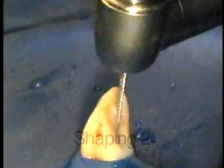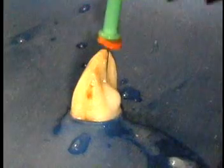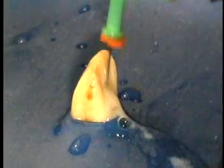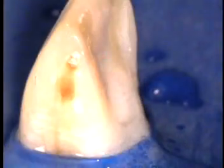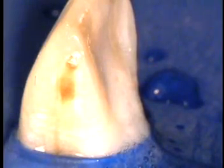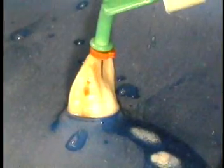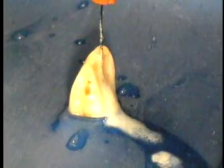This technique is now repeated with the shaping file number two, that technique again being lubrication with file-ease, file, irrigation with sodium hypochlorite. And it's also repeated with the third shaping file. You use each file for about a minute, or until the file is very loose in the canal.